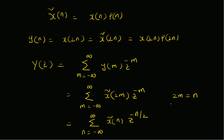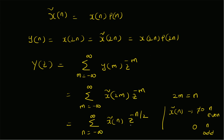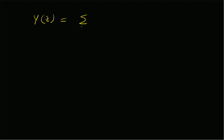Even though x̃(n) has non-zero values — the actual downsampled values — only for even n, for odd values of n it will be 0. So x̃(n) equals the downsampled values when n is even, and 0 when n is odd. Therefore, we can replace x̃(2m) with x̃(n) summed over all integers, with z^(−m) replaced by z^(−n/2). We can further substitute x̃(n) = x(n)·p(n) from the definition. Therefore, Y(z) = summation from n = −∞ to +∞ of x(n)·p(n)·z^(−n/2).